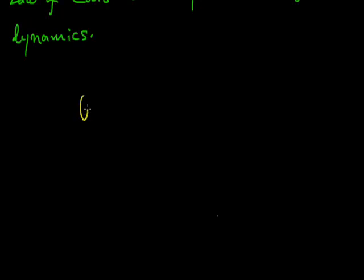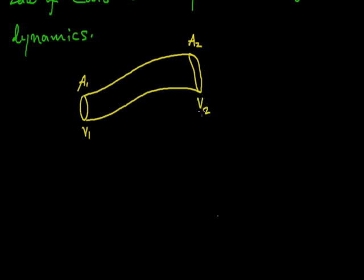Let this be a closed tube. Area of cross section at this end is A1 and velocity of fluid is V1. Similarly, area of cross section at the second end is A2 and velocity of liquid is V2.